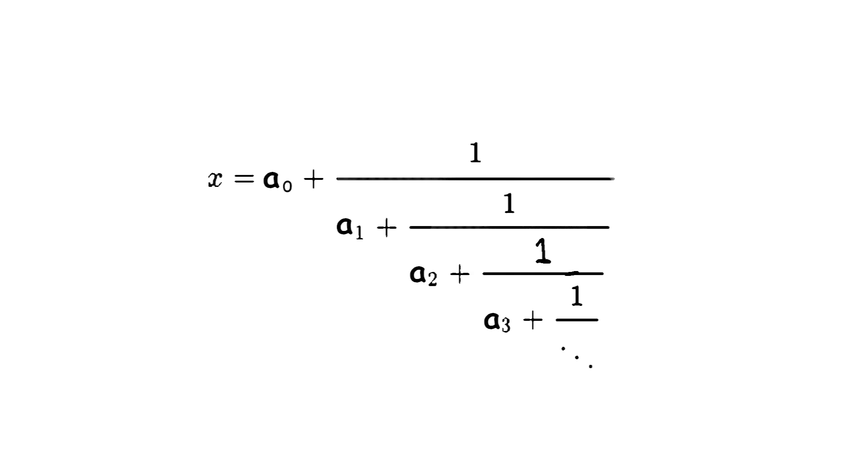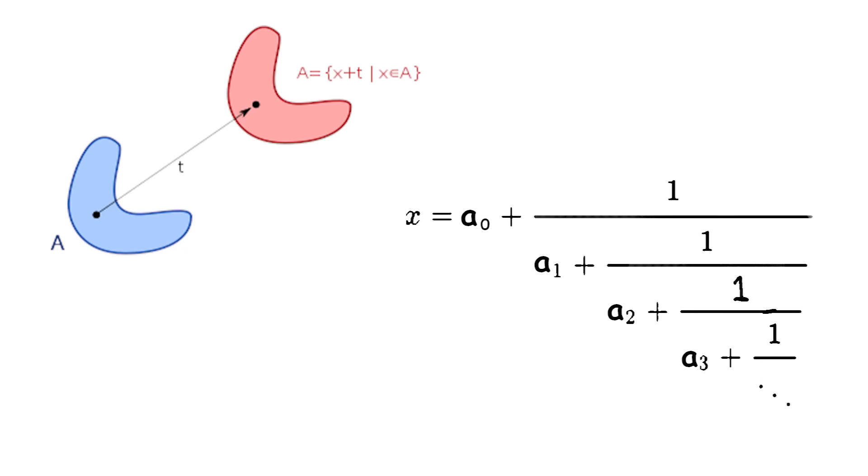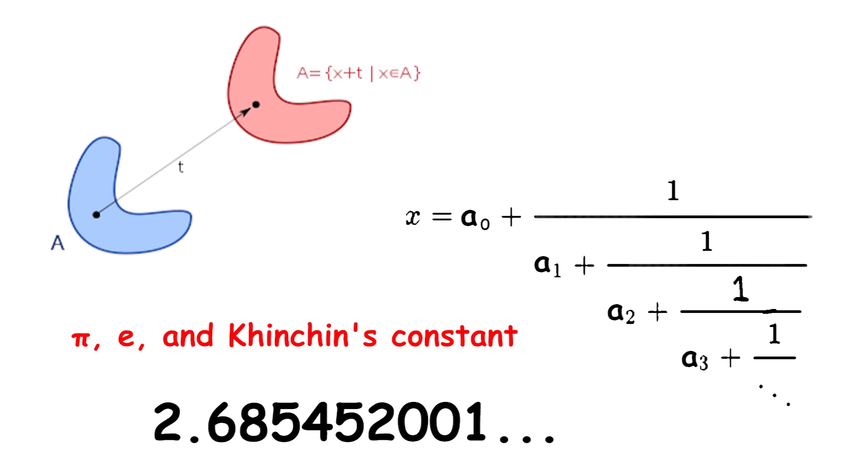Khinchin proved that for almost all real numbers x, with respect to Lebesgue measure, the geometric mean of the partial denominators a_1, a_2, a_3, and so on, up to a_n, converges to a constant K as n goes to infinity. Its value is approximately 2.685, and Khinchin's constant K is an irrational number, but it is not known whether it is transcendental. While K is known to exist for almost all real numbers, it has not been rigorously proven for any specific real numbers, including pi, e, and Khinchin's constant itself.